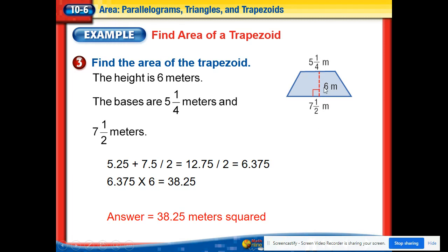And we get 6.35. That number then gets multiplied by the height. Times 6, and we get 38.25. So taking the two bases, adding them up, divide by 2, and multiply by our height. Always multiplying by our height. So 38.25 meters squared.